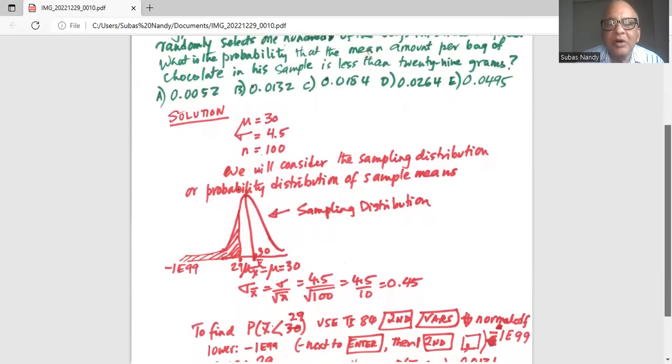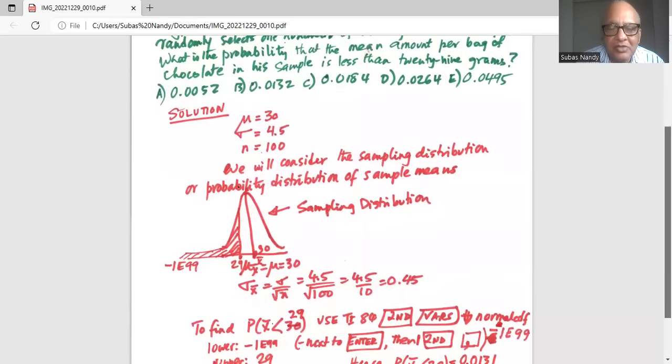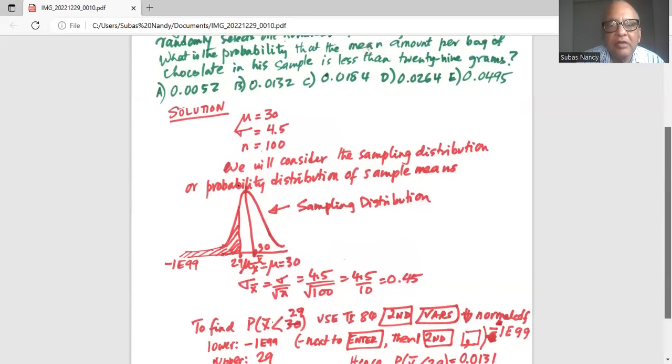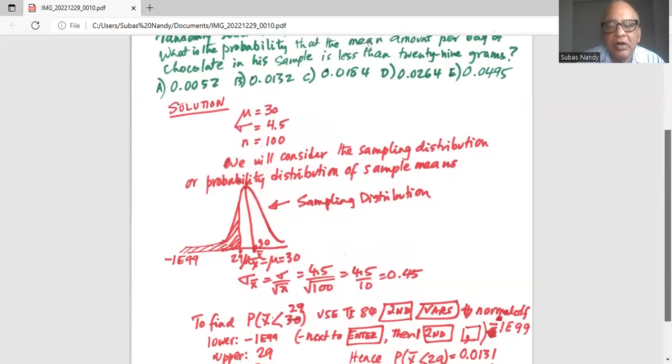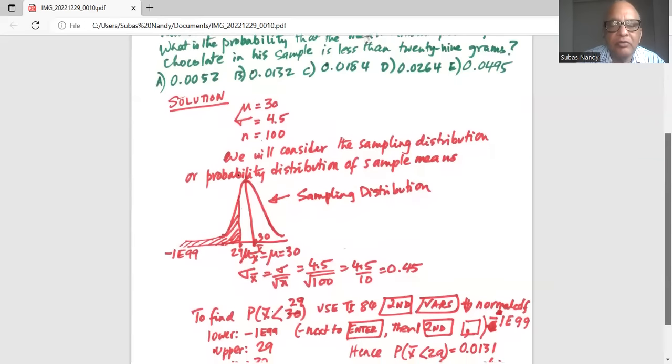And sigma x bar which is the standard deviation of the sampling distribution, sometimes also called standard error, is sigma divided by square root of n. Now sigma is 4.5, n is 100. So sigma x bar is 4.5 divided by square root of 100 or 4.5 divided by 10 which is 0.45.